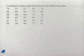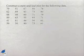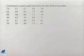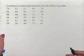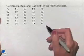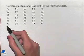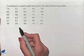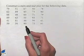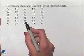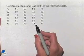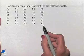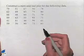Let's look at a problem dealing with a stem and leaf display. Construct a stem and leaf plot for the following data. We have a list here, and we're going to start by noticing that we have two digits for every number. We can see that we have some 40s, 50s, 60s, 70s, 80s, and 90s.